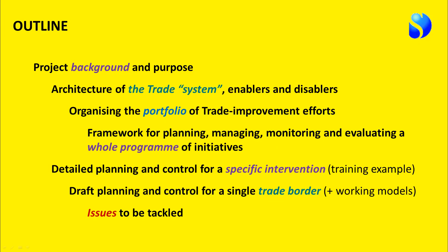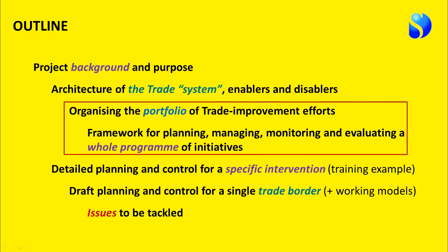In the first presentation, we explained the project background relating to Aid for Trade and laid out the principles of the architecture of the system behind how trade actually works, so we could figure out the enablers and disablers to trade. In this presentation, we've shown how to use those principles to organise the portfolio of trade improvement efforts being made by large numbers of different agencies, and how that might be used to provide the framework for planning, managing, monitoring and evaluating a whole programme of such initiatives. In subsequent presentations, we will explain how to use the approach for detailed planning and control for a specific intervention — training customs officers — and a demonstration of how to plan and control interventions for a single specific trade border, both with working models.